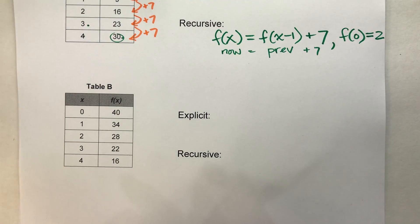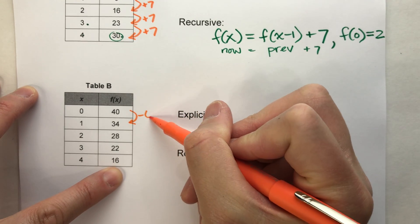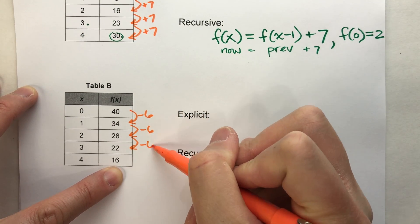Table B. Notice this time, as x increases by 1, f of x is actually decreasing by 6 each time.